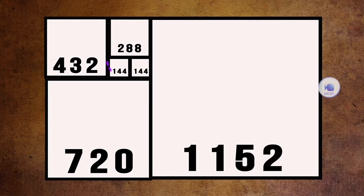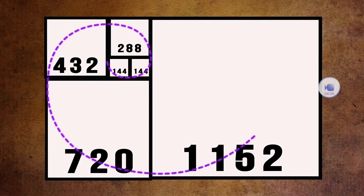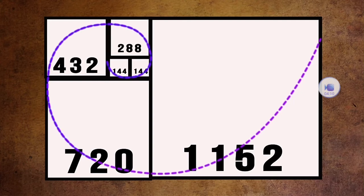As you can see, the combined length of any two previous squares informs how big the next square should be, which in turn dictates not only the arc of the unfolding Fibonacci spiral, but also the tones required to build another numerically perfect major chord.